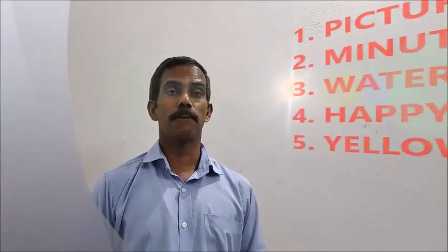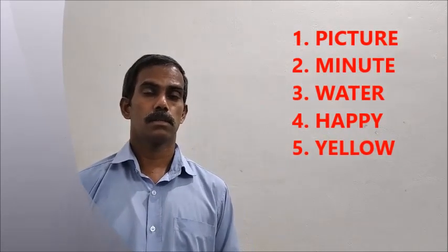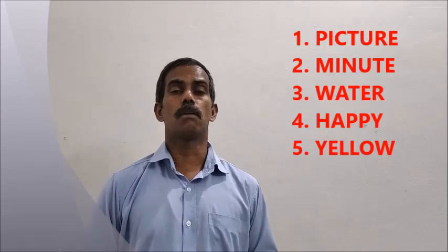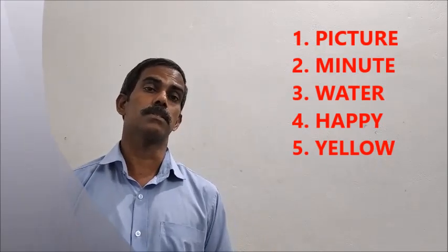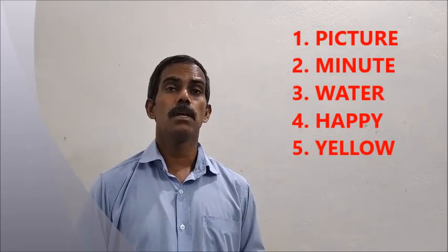The first three — picture, minute, water — are nouns, and happy and yellow are adjectives. In a two-syllable word that is a noun or an adjective, the stress will be on the first syllable. Repeat after me: PICture, MINute, WAter, HAppy, YEllow. The stress is on the first syllable in each of these words.